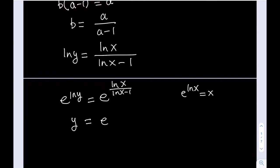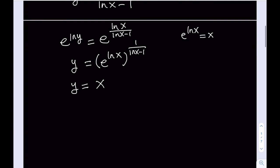But before that I'm going to go ahead and do this. e to the power ln x to the power 1 over ln x minus 1. And then I'm going to replace e to the power ln x with x. And that's going to give me y in terms of x in the simplest form. And that's going to be our answer.